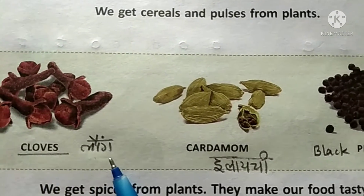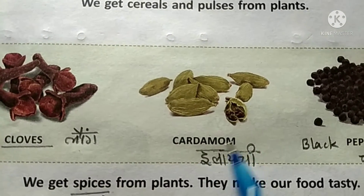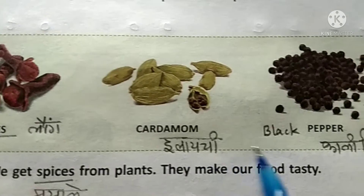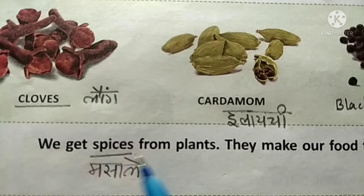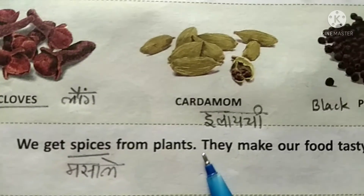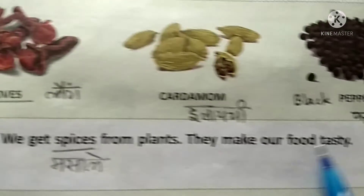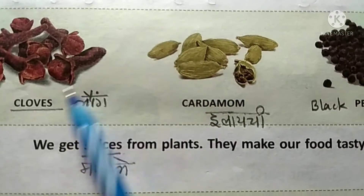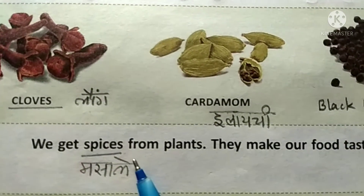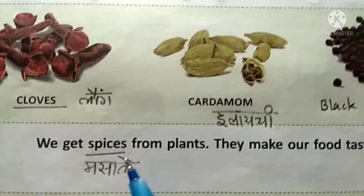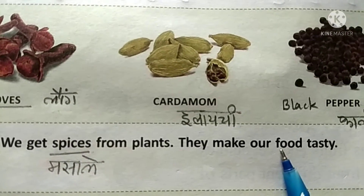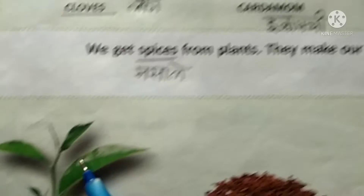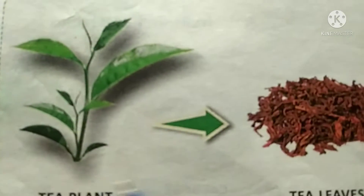Cloves (long), cardamom (ilanchi), black pepper (kalimirch) — we get spices from plants. They make our food tasty. यह spices, जो मसाले होते हैं, मसाले हमारी भोजन को tasty बनाते हैं.